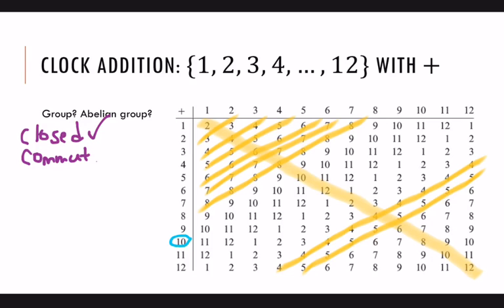So this is a commutative system. You could check one or two if you're having trouble seeing it. For instance, ten plus five is three, and then check five plus ten. Here's five, and ten is also three. So that is a commutative system.